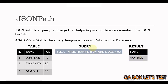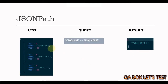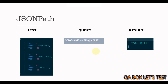Likewise, if we have the same data but this time represented in JSON format, we would use JSON path to retrieve the result and the query would look something like this. In the later video in this series, I have explained all the constructs of this query in much more detail.